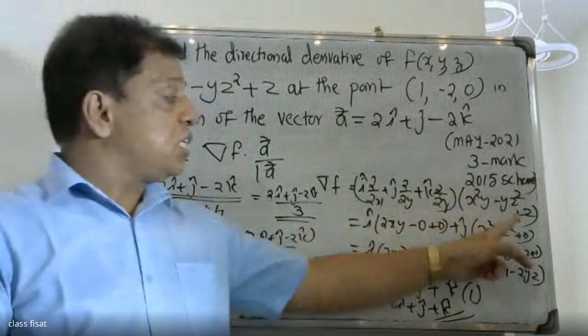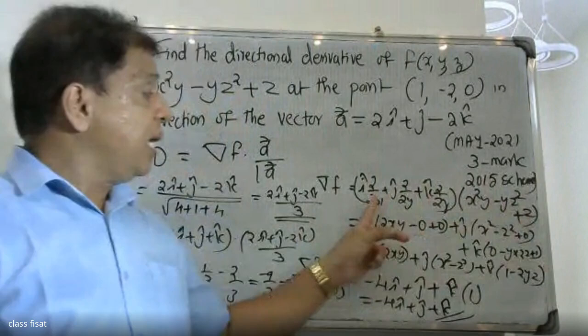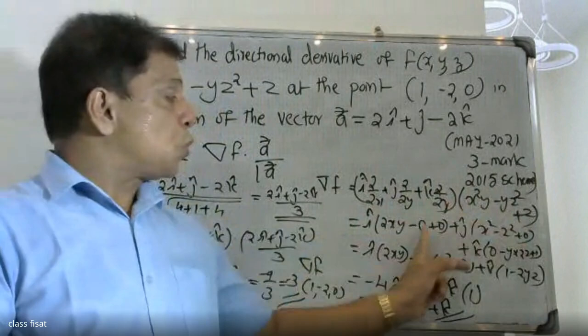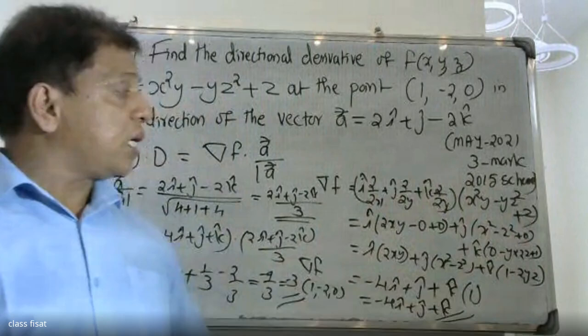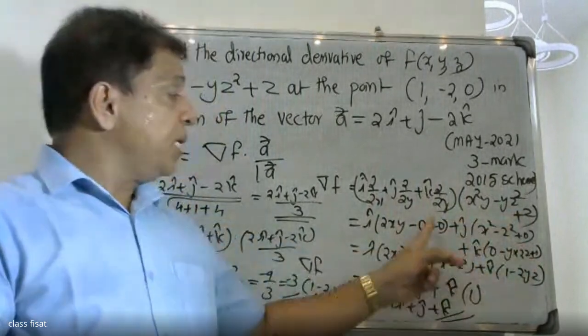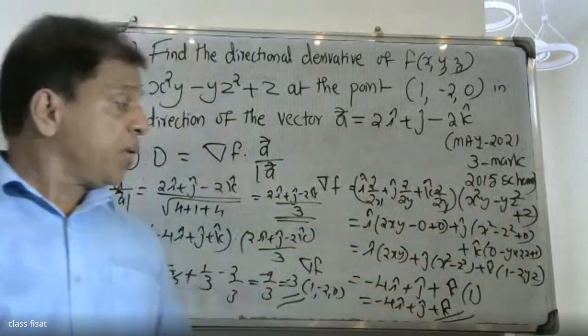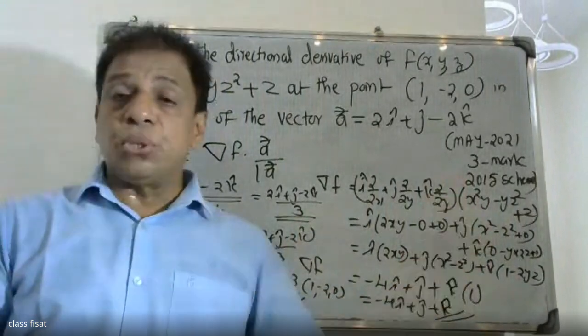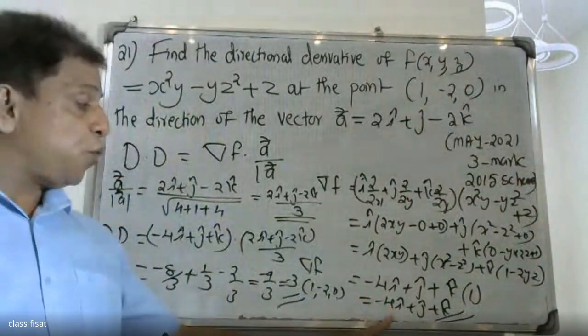Getting 2xy for the x derivative, x² - z² for the y derivative, and 1 - 2yz for the z derivative. At the point (1, -2, 0), substituting gives gradient f equals -4i + j + k.